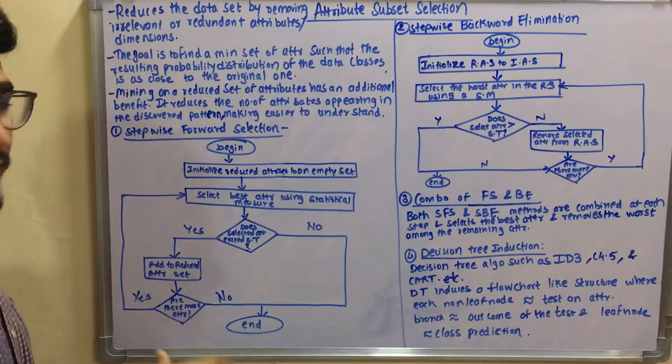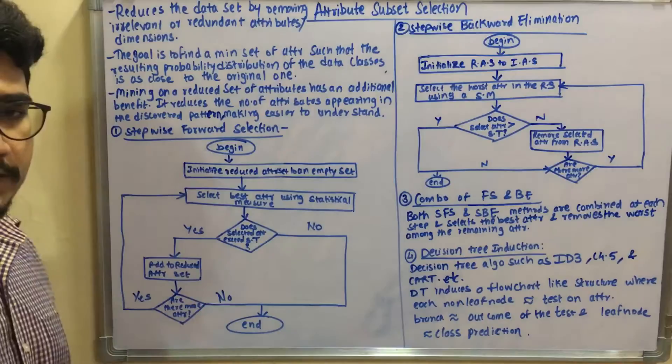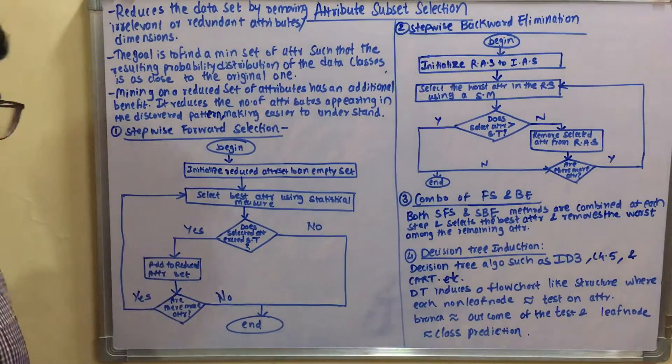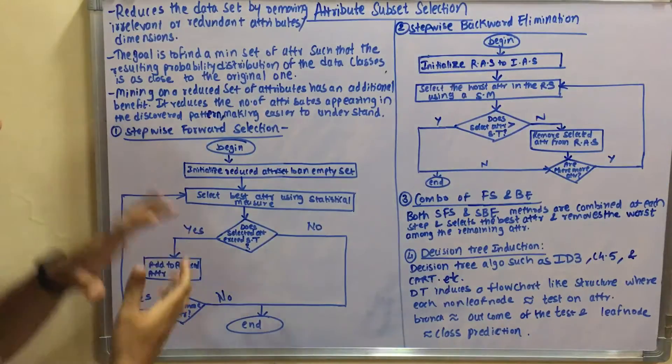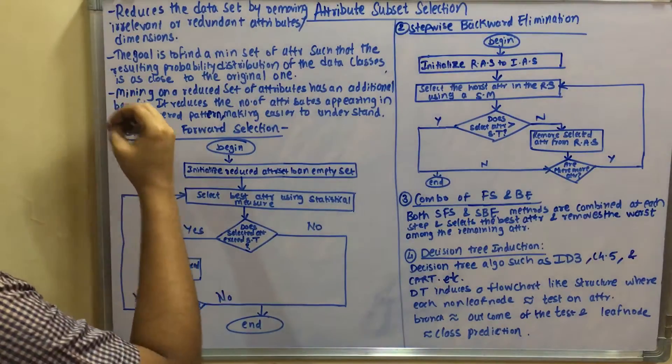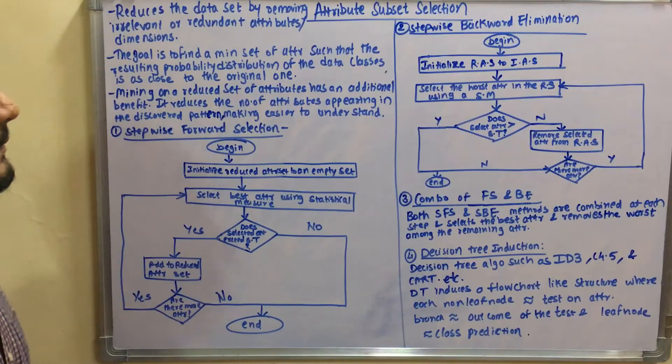If it's yes and it's added to the attribute set, then again check whether there are any more attributes from this reduced attribute set. If yes, it will go into the loop and execute. This is how you select the attributes in a forward manner in a stepwise way.